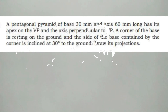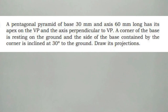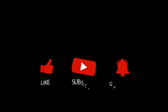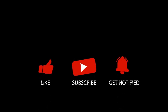The apex is on the VP plane and the axis is perpendicular to the VP. The pentagonal base has 5 corner points. The vertical axis meets at the apex point, and one of the sides — the corner — is at a 30 degree angle.